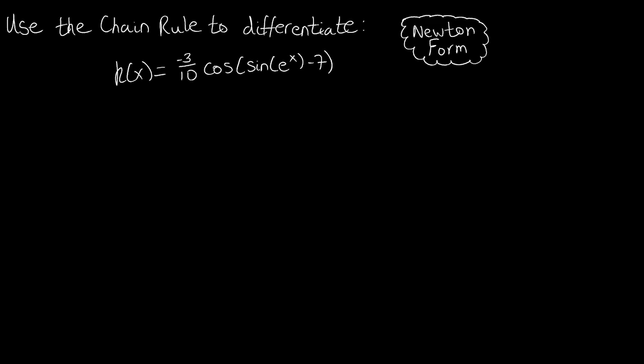So what I mean by that is, as we read this function we have -3/10, so we know this is a constant multiple. In a lot of our processes we can exclude this and bring it back in at the end because it doesn't play a big bearing on what the derivatives will turn out to be.